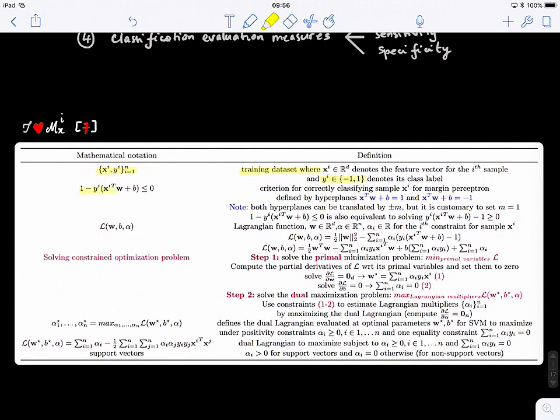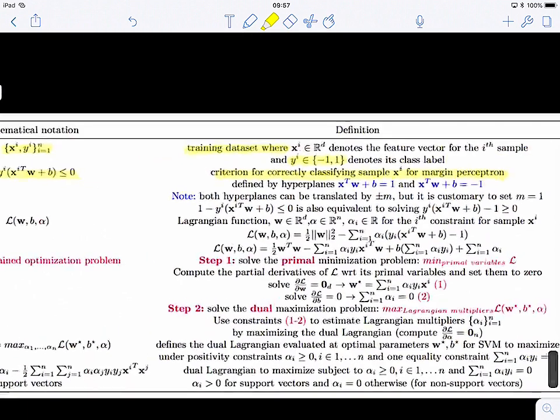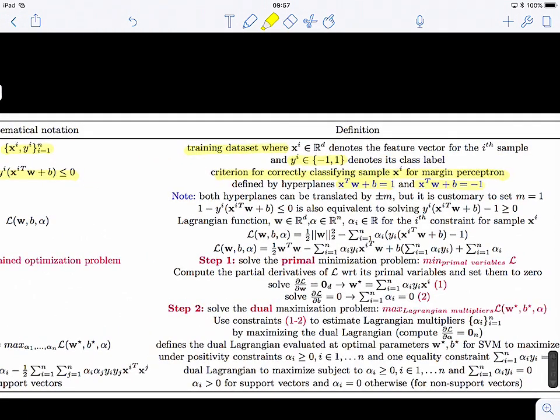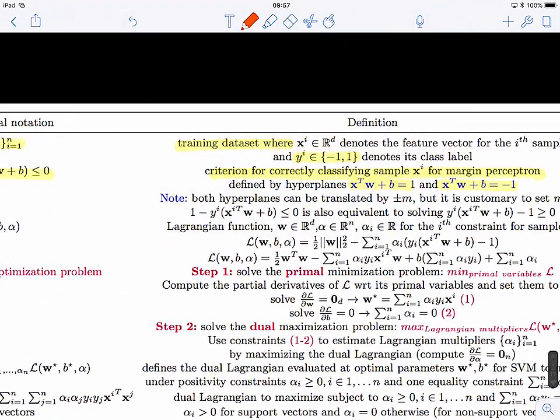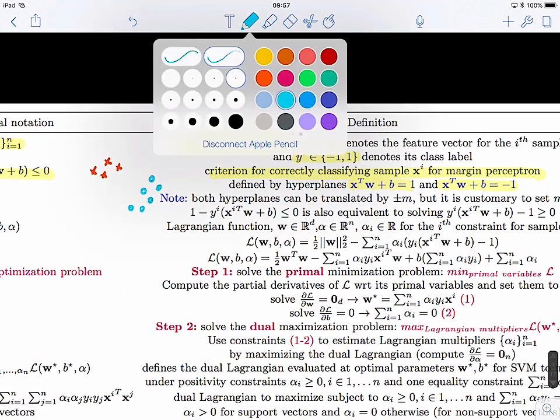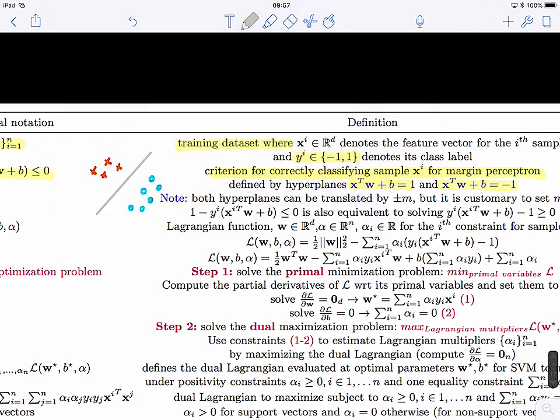And we defined the criterion for correctly classifying samples using margin perceptron. And actually here, there's an important note I would like to make in this recap. So if you remember, we have two classes. These can be videos, images, brains, medical data, it can be anything. So we want to classify them. We want to estimate the parameters for this hyperplane, x transpose W plus B equals zero.